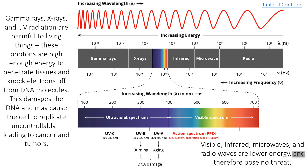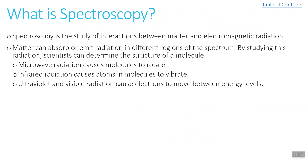Visible, infrared, microwaves, and radio waves at lower energies don't pose any threat to humans. Every once in a while you get a video where somebody waters a plant with microwaved water versus regular water — that's not real. Spectroscopy is how we study the interactions between matter and photons of different types of electromagnetic radiation. Matter can absorb or emit radiation in different regions of the spectrum. Microwave radiation causes molecules to rotate; infrared radiation causes atoms and molecules to vibrate; and ultraviolet and visible radiation causes electrons to move between energy levels — as you saw in a flame test lab.